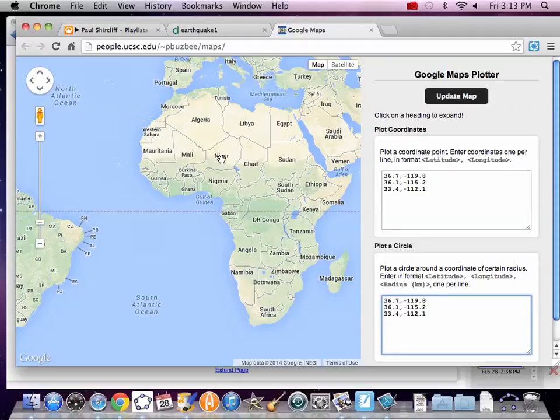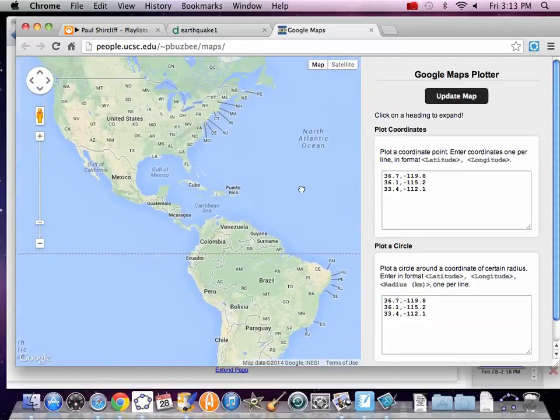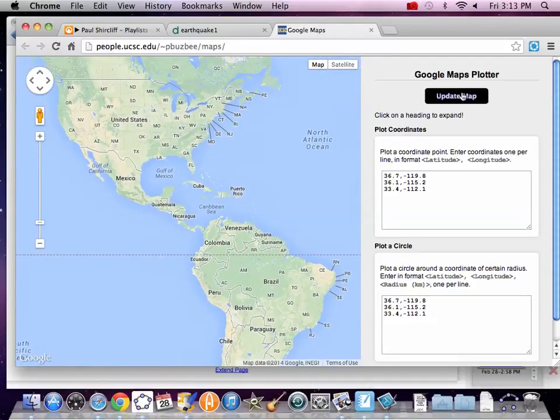But why is nothing showing up? Oh, you've got to find them. Oh wait. I also have to tell it to update the map. Boom. Look, there's the circles. Awesome. Yeah, they're over here. Right where I thought. Yeah, they're not next to each other. Hey. Good.